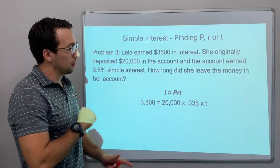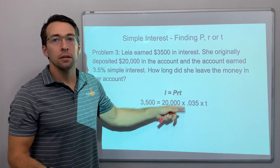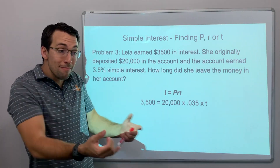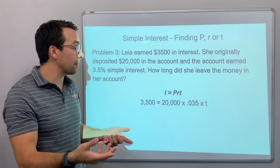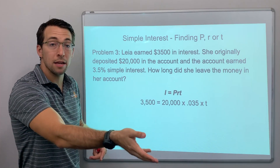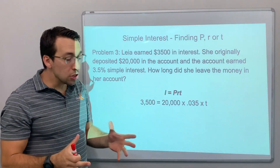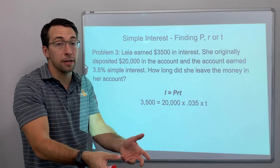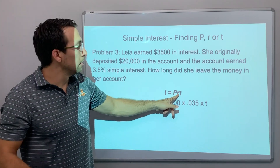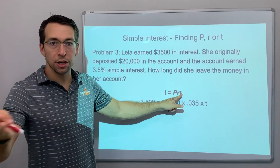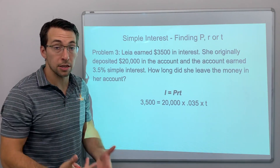Interest equals principal times the rate times time. So what is the interest? The interest is the amount of money you make off of your savings account or checking account. The bank will pay you money to keep your money there. Principal is the amount that you deposit — you start with this much money. The rate is the multiplier on your money, and time is the duration, the length of the period that your money is accruing, earning interest.